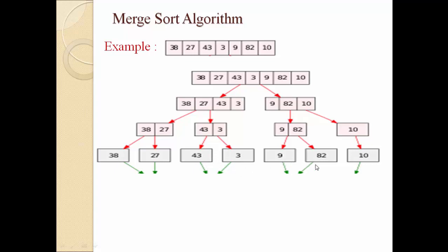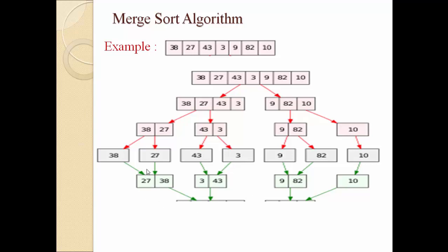When we merge 43 and 3, then 3 will be first and 43 will be second. When we merge 9 and 82, then 9 will be first and 82 will be second, and 10 is a single element. So we get pairs: 27, 38; then 3, 43; then 9, 82; and the last element 10. Now when we merge these two lists — each having two elements — we compare the first element of the first pair, which is 27, with the first element of the second pair, which is 3. The minimum, which is 3, will be stored in our third array.